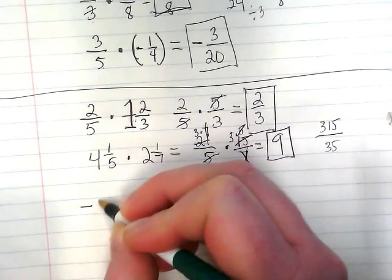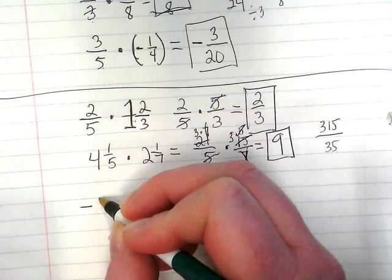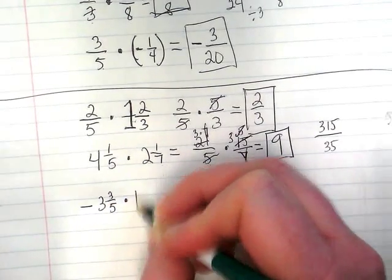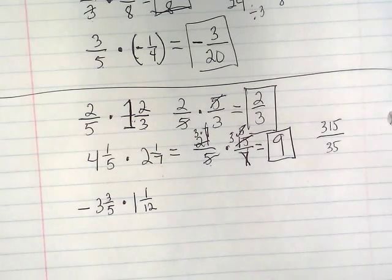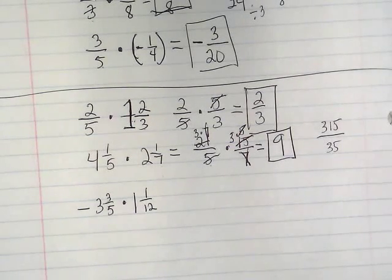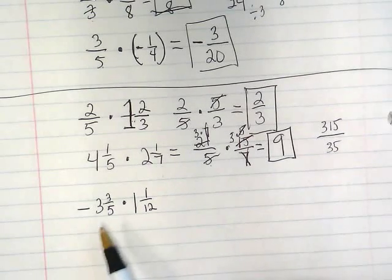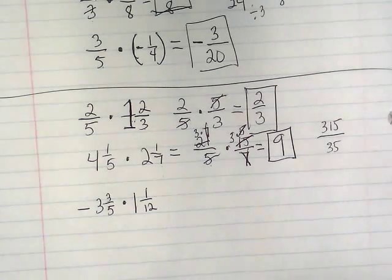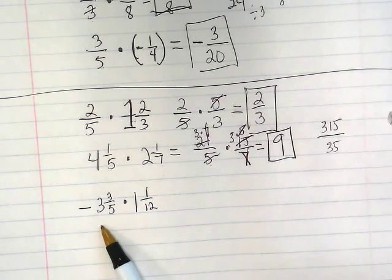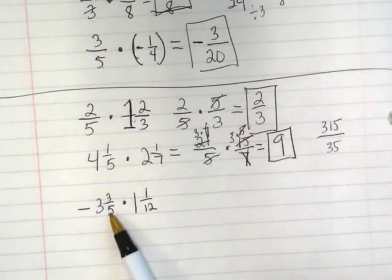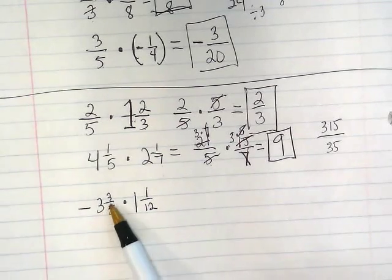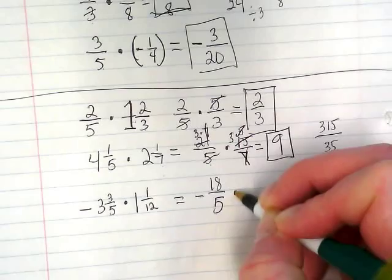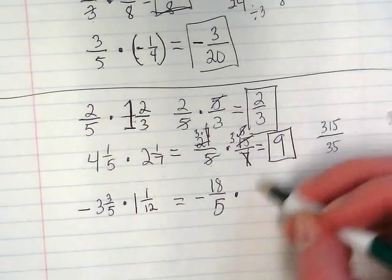Last example. So let's do negative 3 and 3 fifths times 1 and 1 twelfth. We have to be careful that we don't lose that this is a negative times a positive because we're going to be doing quite a bit of steps in between. But just looking at that, our answer is going to become what kind of a number? Negative. It's going to be a negative answer. So here I've got 5 times 3 is 15 plus 3 is 18. So this equals negative 18 fifths times 13 twelfths.